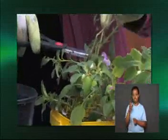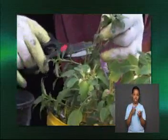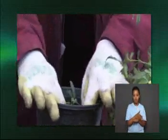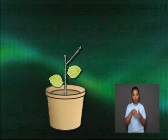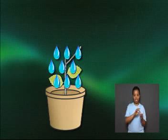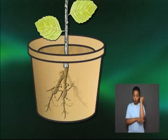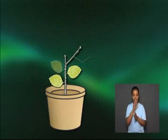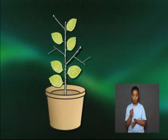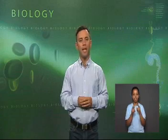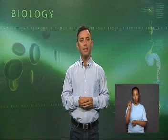This involves cutting off a piece of a plant's stem and planting it in fertile soil. In a few weeks, if it is well watered, the stem will develop its own root system, and it will become an independent plant. This method of cloning plants has been practiced for thousands of years.